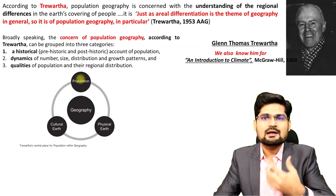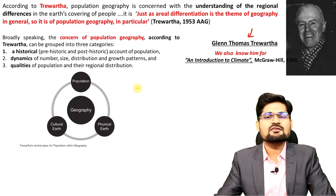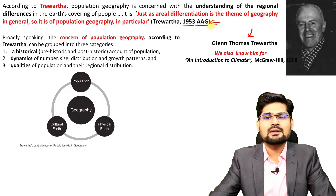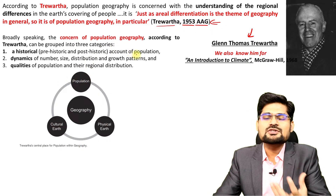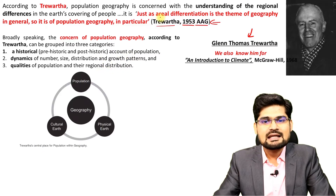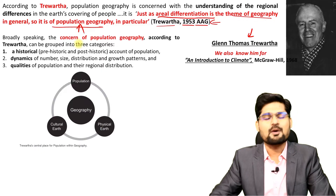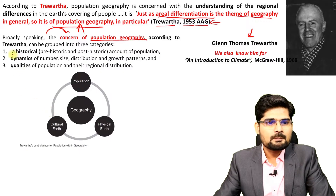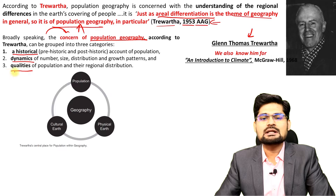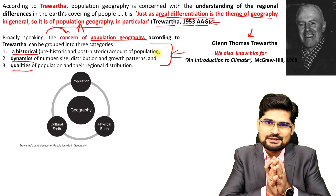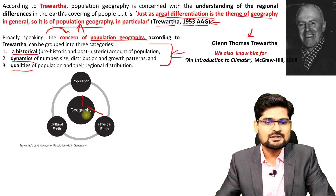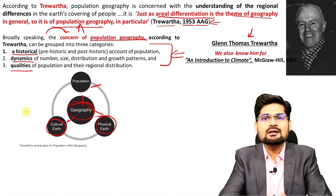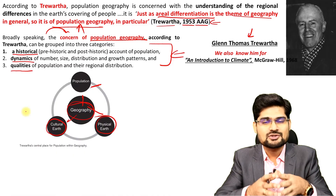Looking into the scholarship around population geography, remember Glenn Thomas Trewartha, famously known for climatic classification, was primarily also a population geographer. His 1953 Association of American Geographers lecture was very famous, where he addressed that population geography is simply understanding the regional differences, the uniqueness, the aerial differentiation in the theme of geography in terms of its population. Broadly speaking, the concern of population geography is historical, dynamics, and qualities — combining these three becomes the totality of the subject matter.